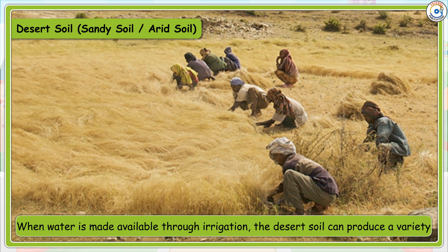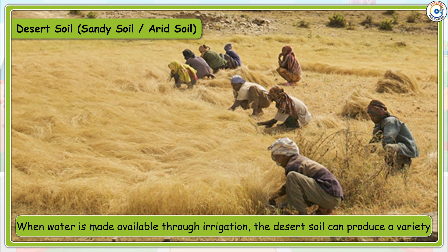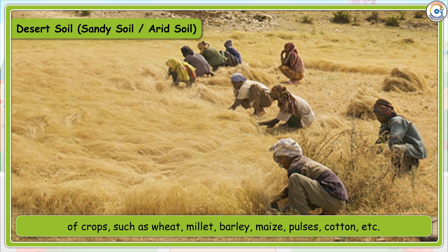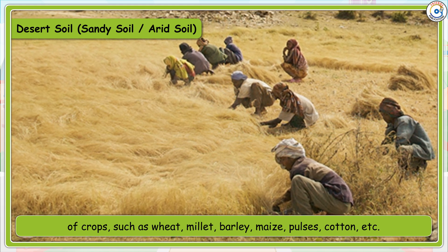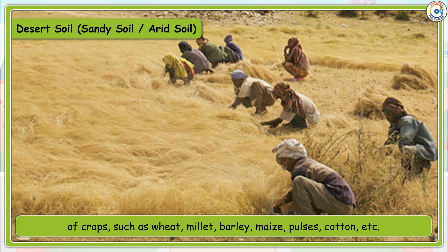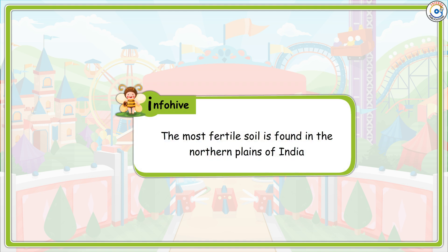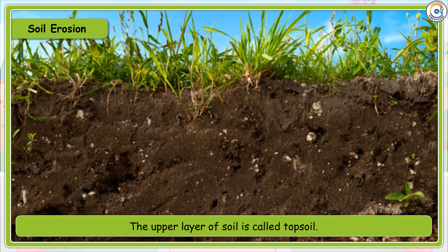When water is made available through irrigation, desert soil can produce a variety of crops such as wheat, millet, barley, maize, pulses, cotton, etc. The most fertile soil is found in the northern plains of India.